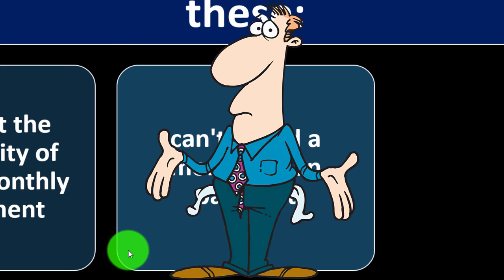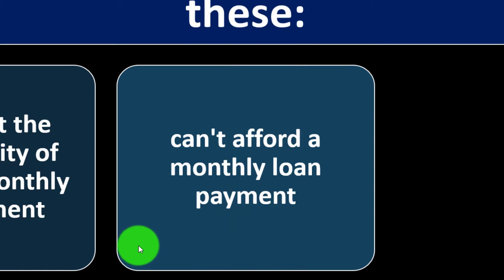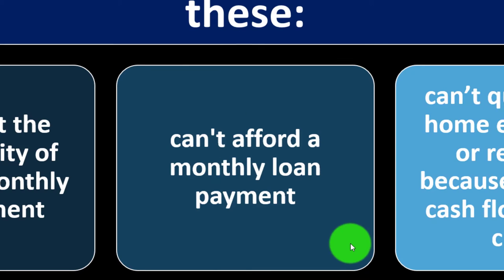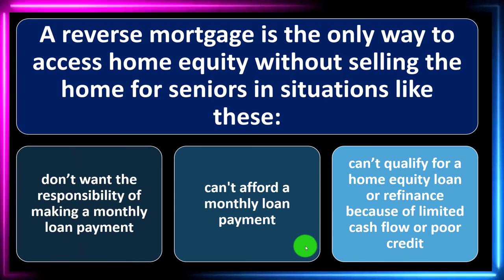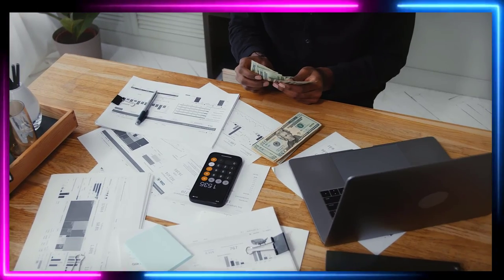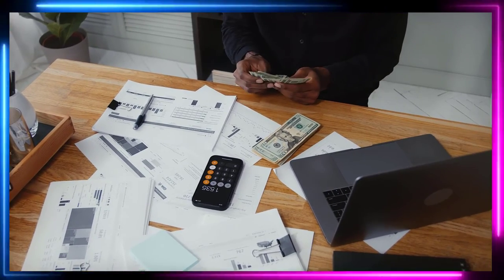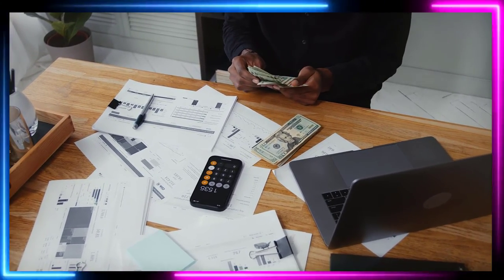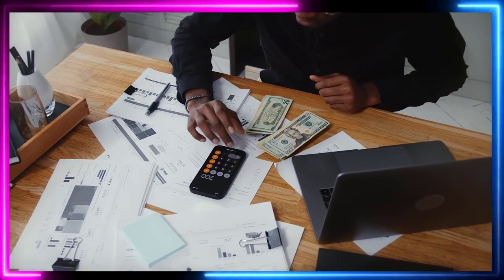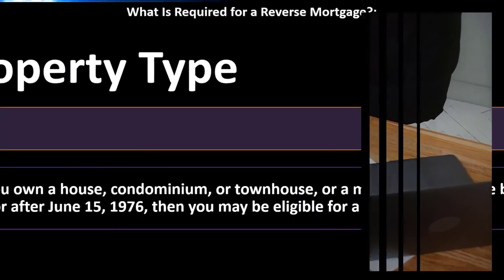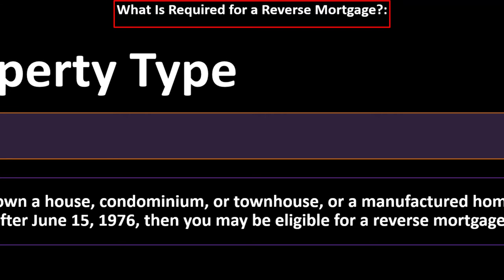A reverse mortgage is potentially the only way to access home equity without selling the home for seniors in situations like these: they don't want the responsibility of making monthly loan payments, can't afford the monthly loan payments but have substantial equity in the home and want to stay, or can't qualify for a home equity loan or refinance because of limited cash flow or poor credit.